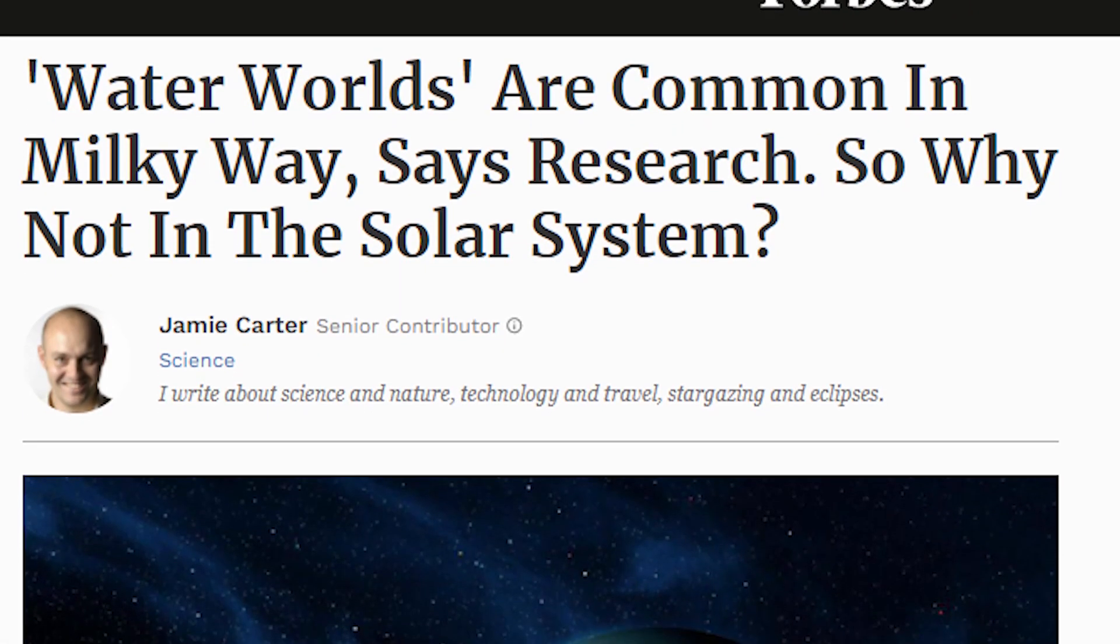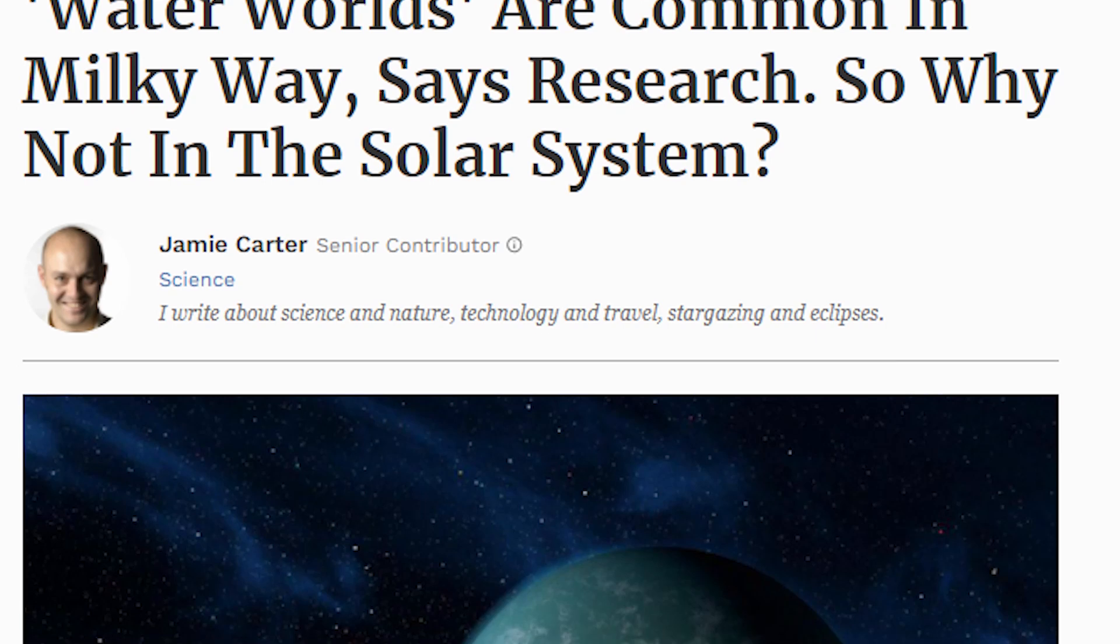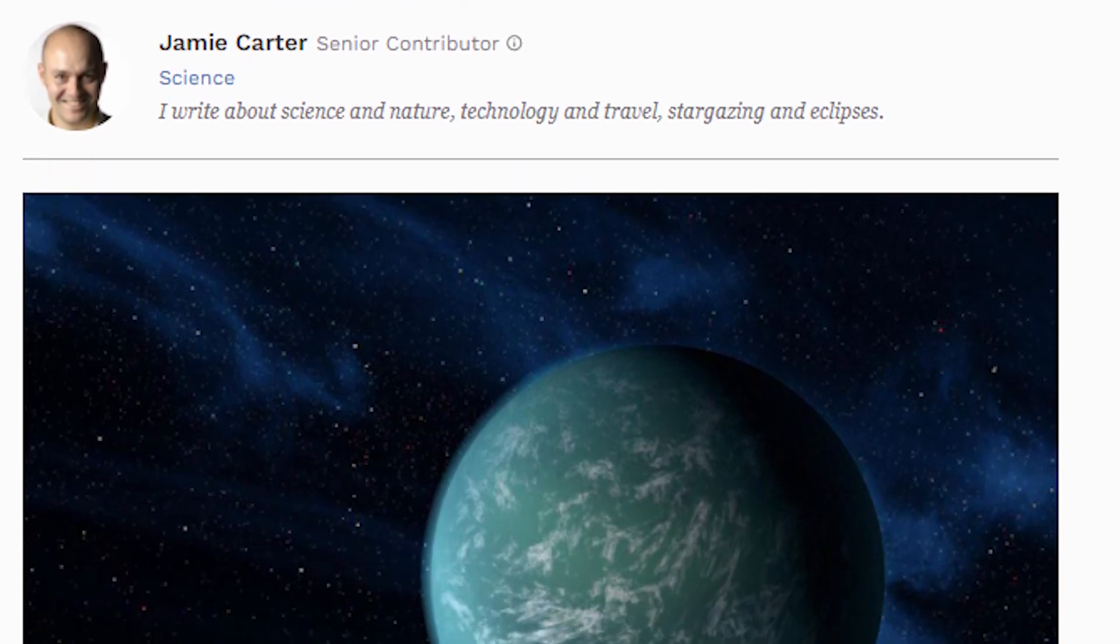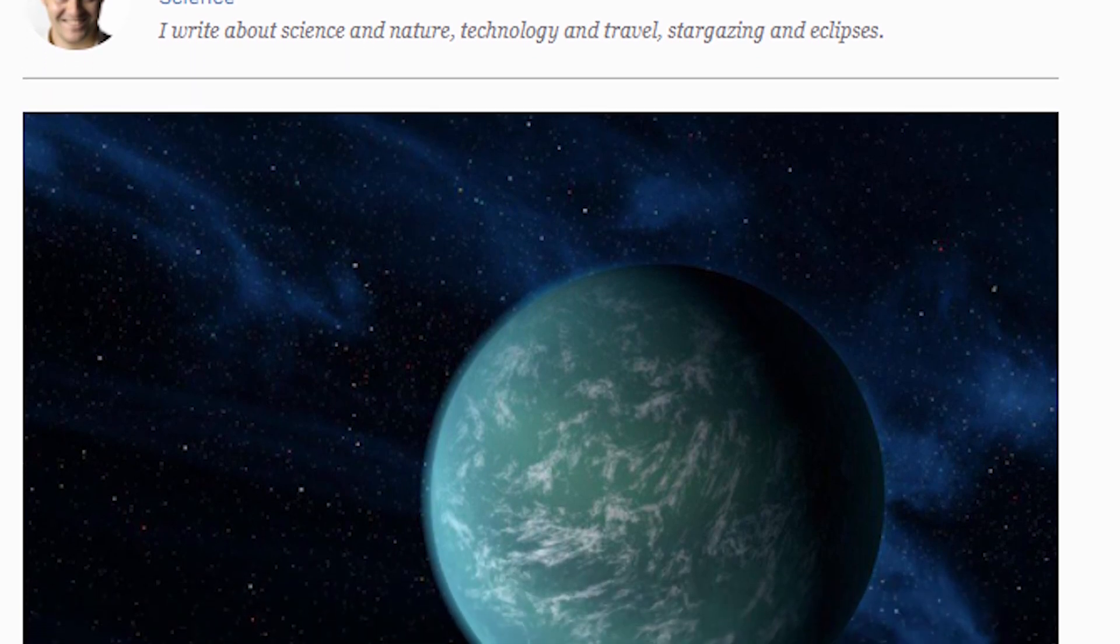It's possible that at one point in the evolution of our solar system, there were water worlds orbiting around our star. But unlike the idea of Jupiter originating close to our sun, there's not much evidence to support this idea.